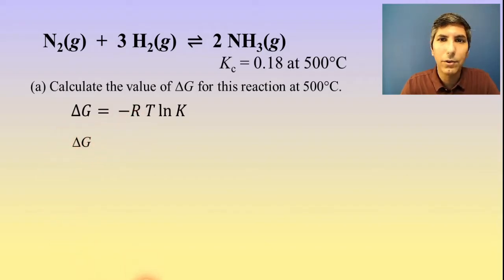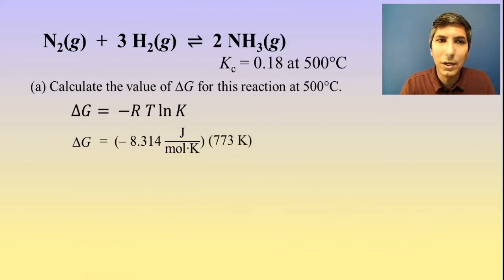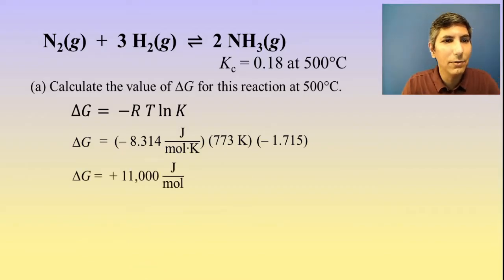Delta G equals negative RT natural log of K. So we're solving for delta G. The R is that universal gas constant, 8.314 joules per mole per Kelvin. The temperature is given to us as 500 degrees Celsius. So in Kelvins, that's 773 Kelvins. And then we have to take natural log of this equilibrium constant. The natural log of 0.18, according to my calculator, is about negative 1.715. So now I'm going to multiply these values by each other, and I find that the delta G equals about positive 11,000 joules per mole.